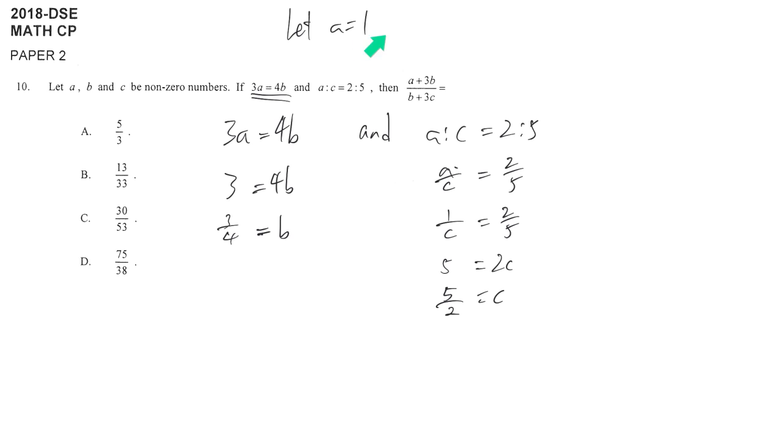So by letting the value of A, we get exact values of B and C. That's why when you calculate this, you just simply use your calculator, no skills at all. And then this is A plus 3B